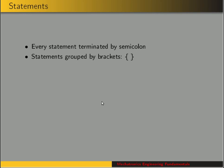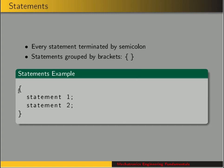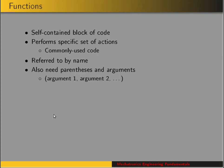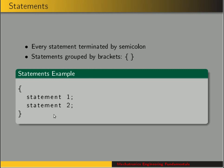To start off, we're going to look at some things that are common to C programs. We have statements. A statement is a line of code, and you can group statements with brackets. Here's an example: we've got these two statements grouped together with brackets — statement one, then a semicolon, statement two. Every statement ends with a semicolon.